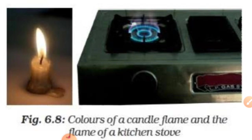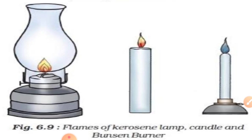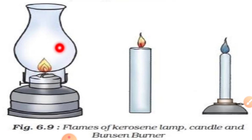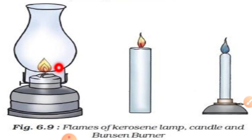A flame produced by kerosene when burned in a lamp is yellow in color. When we burn kerosene in a lamp, the flame color is yellow and it is very smoky.